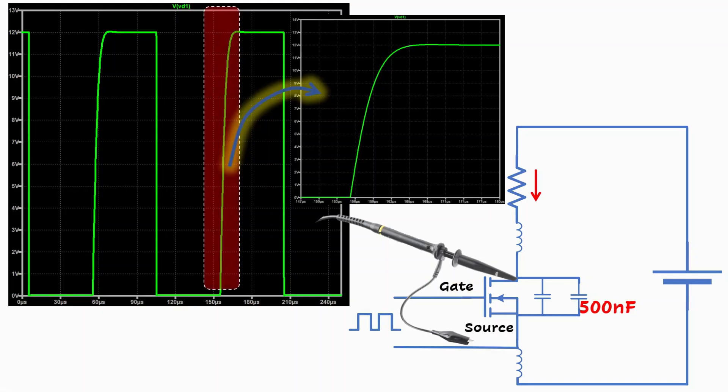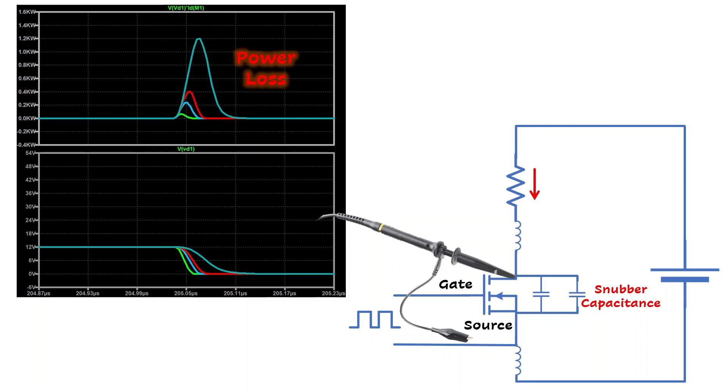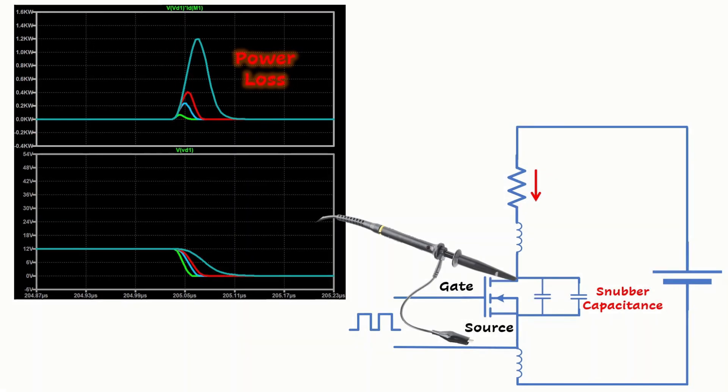So here we put a 500nF capacitor and that eliminated the oscillation completely. But what about the losses? This chart shows how much loss we have when we increase the snubber capacitance. So we have a trade-off for the capacitance selection between the energy loss and the peak and oscillation damping.